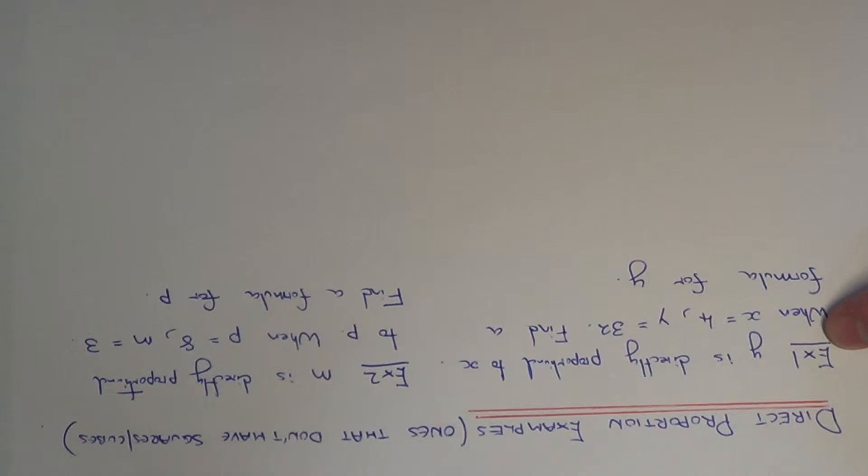So y is directly proportional to x, when x is equal to 4, y is equal to 32, and we need to find a formula for y.